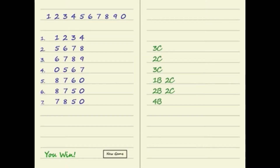Bulls and Cows is an old code-breaking paper and pencil game. In this video we are going to try to create this game with Arduino.